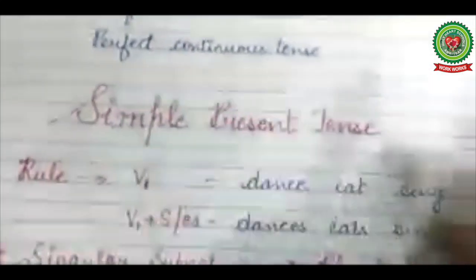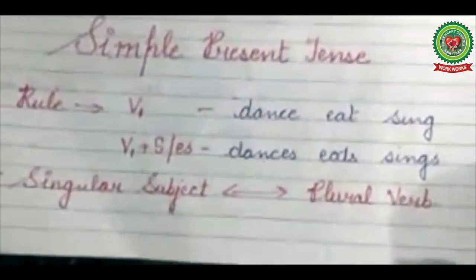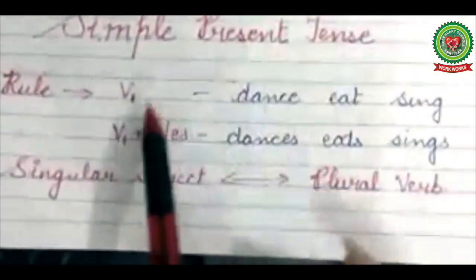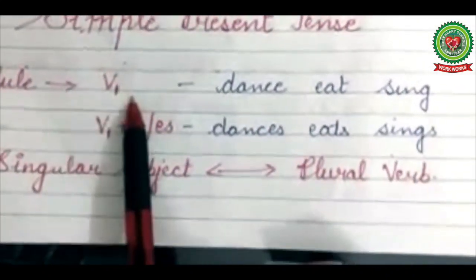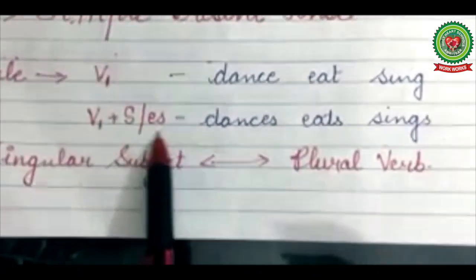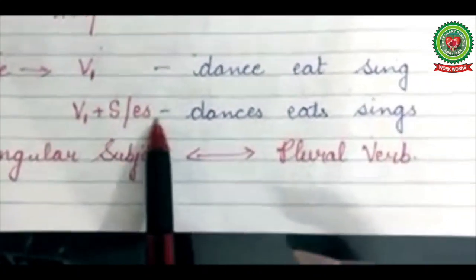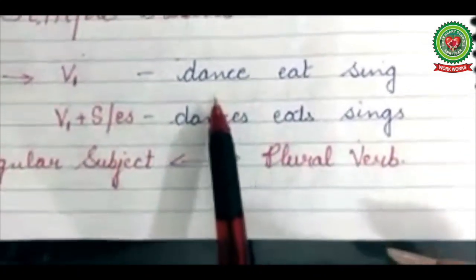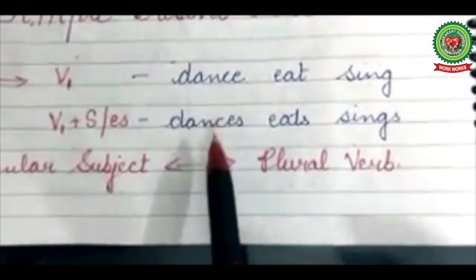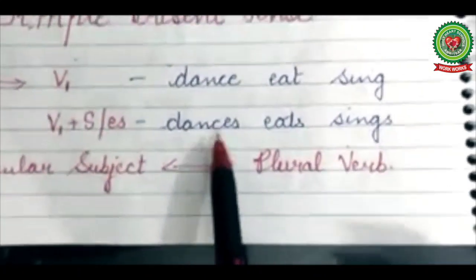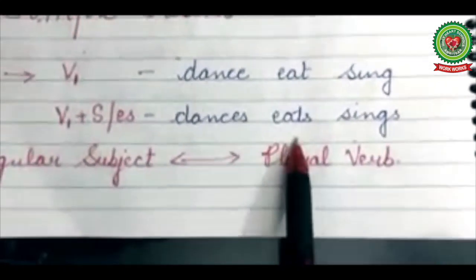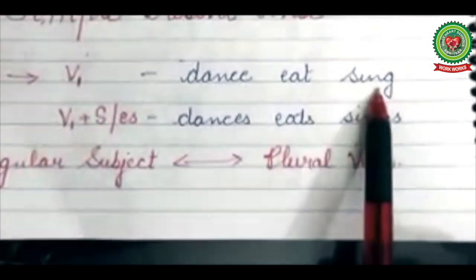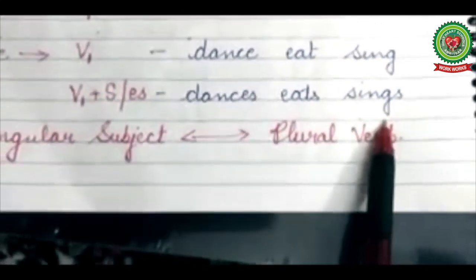Coming to the rules of the simple present tense: the rule is present form of the verb plus S or ES. For example: dance → dances, eat → eats, sing → sings.